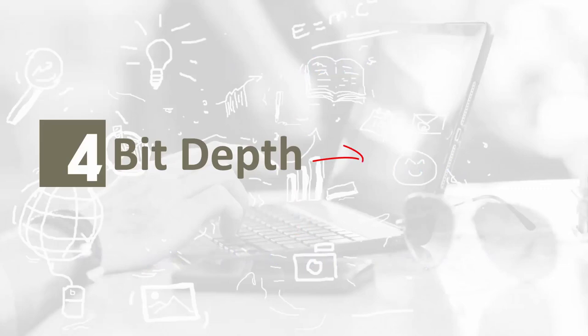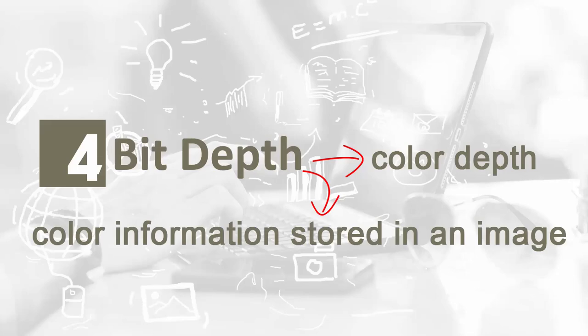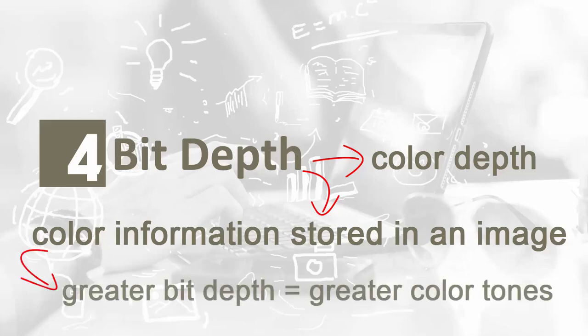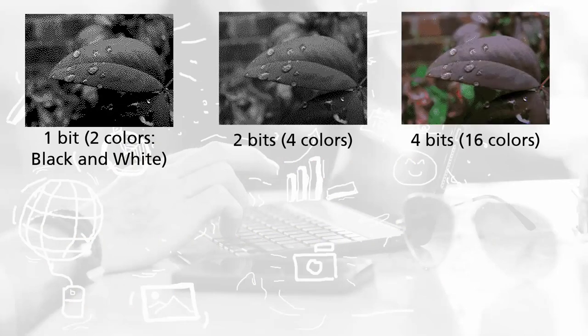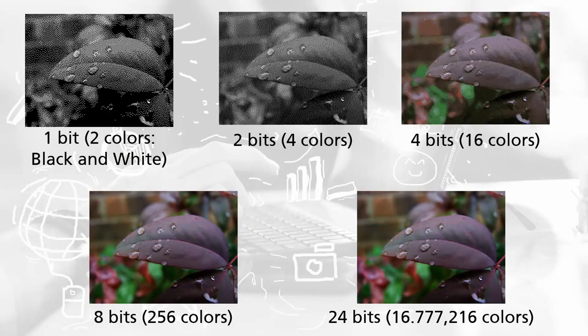Bit depth, also known as color depth, refers to the color information stored in a digital image. Bit depth allows us to produce images in black and white, grayscale, or color. The greater the bit depth of an image, the greater the number of color tones it can store. This series of images provides a better idea about bit depth. You will notice that there is a transition of colors from a 1-bit image to a 24-bit image, from black and white to gray to color.